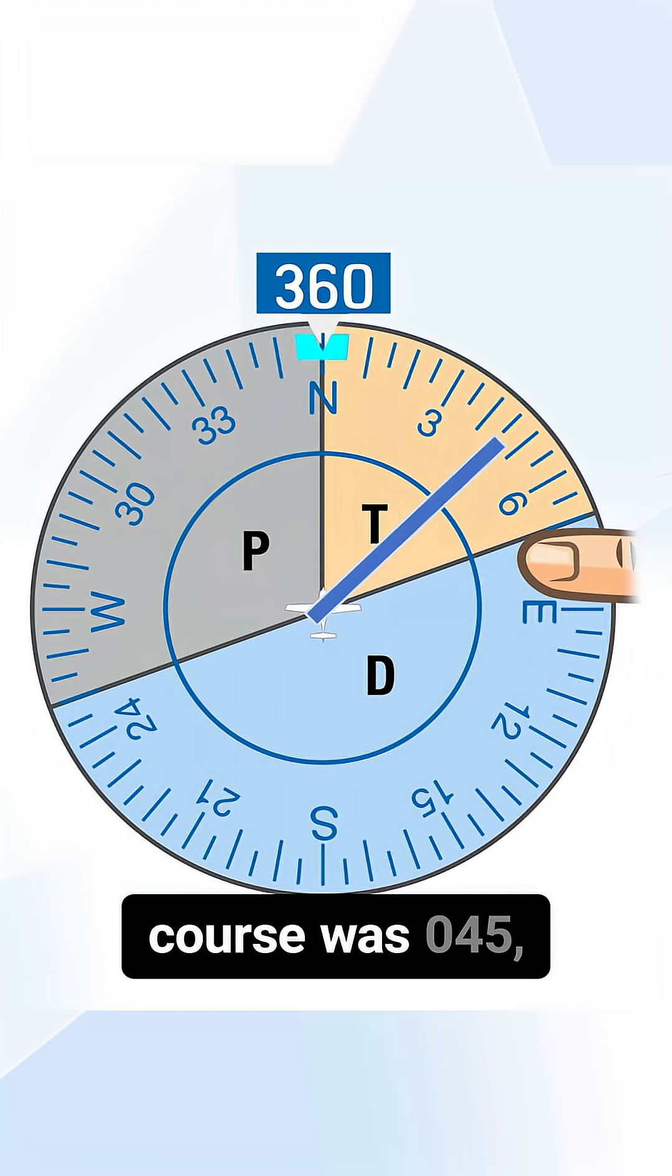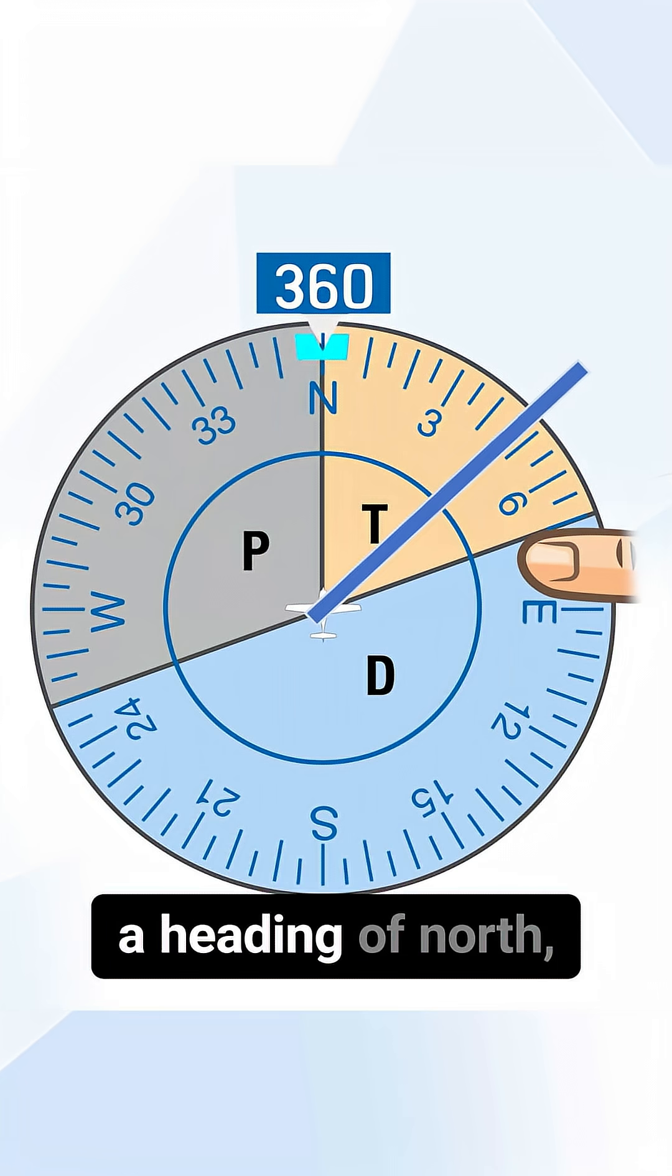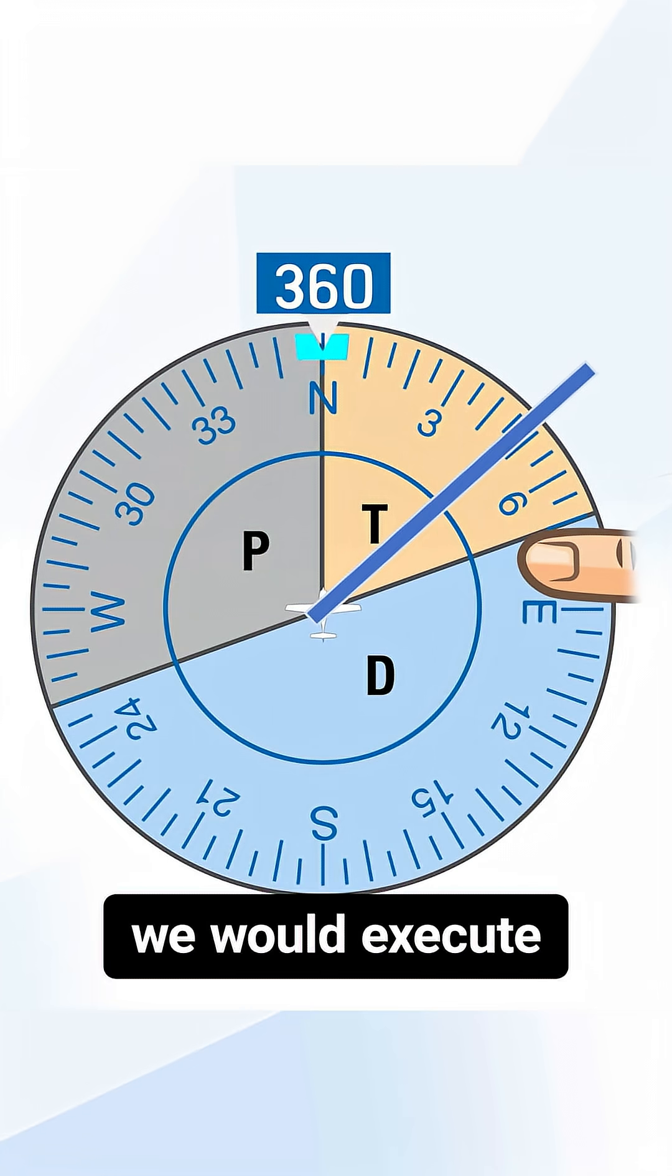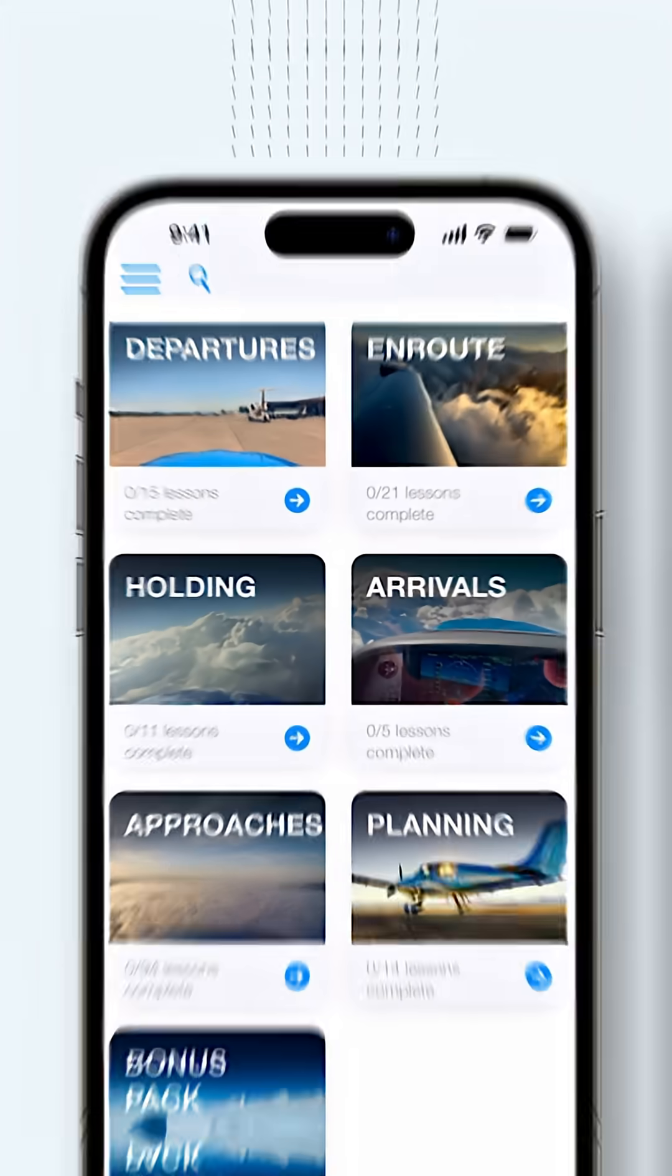And if our holding course was 045, then if we were arriving on a heading of north, we would execute a teardrop entry.